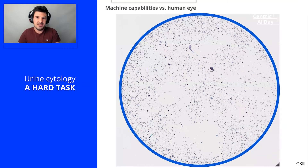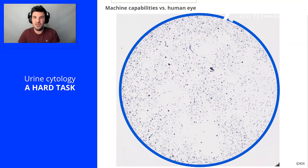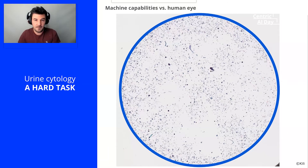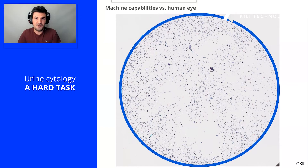So why is urine cytology so hard? Simply because the pathologist is alone with his microscope in front of a slide containing about 30,000 cells. It will be complicated for him to look at all these cells and to detect sometimes weak signals of cancer to say whether or not we are in the presence of bladder cancer. So much so that for early cancers, urine cytology has only 25% sensitivity.